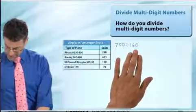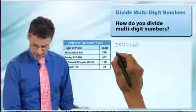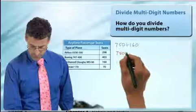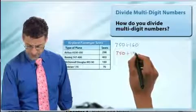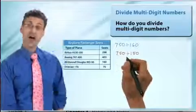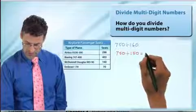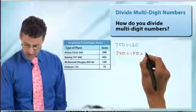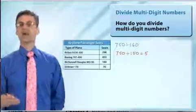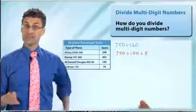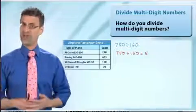And if you think about it a little bit, it turns out that a good compatible number would, in fact, be 150 because 750 divided by 150, that one's not too bad. If we work that out, we'd see that we get a quotient of five. So what that means is that five is our estimate. It means that we would estimate that we're going to need around five airplanes.